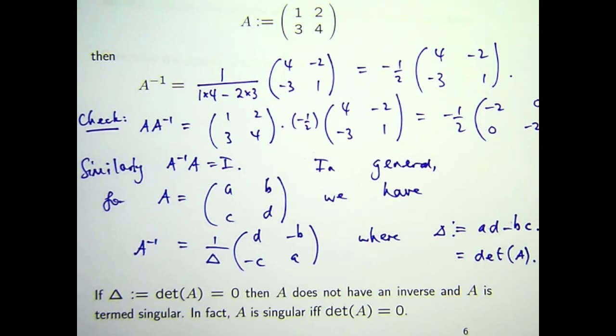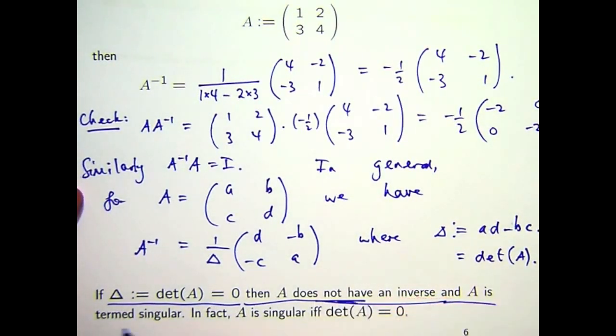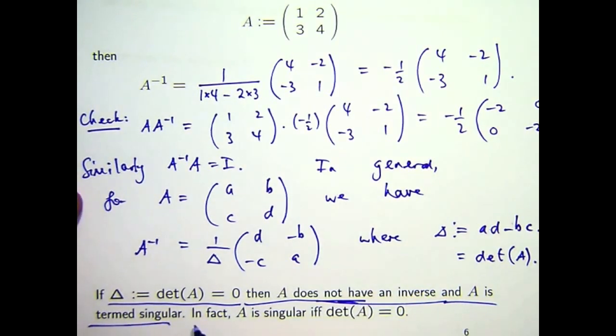Now, I said before that not all matrices have inverses. So I guess you could formulate a matrix where the determinant is 0. And this formula then wouldn't work because you'd be dividing by 0 there. So if the determinant's 0, then the original matrix does not have an inverse. And we say that A is a singular matrix. In fact, A is singular if and only if the determinant's 0. So that's a basic 2 by 2 case.